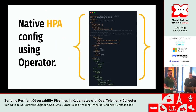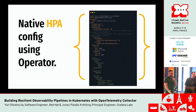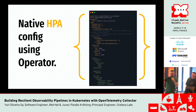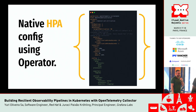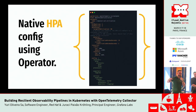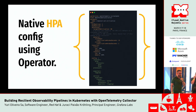The OpenTelemetry Operator CRD allows you to define target CPU utilization, and configure how your OpenTelemetry Collector will behave when it reaches that CPU utilization percentage — a quick demonstration of the operator CRD for auto-scaling.